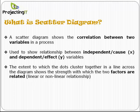A scatter diagram helps to show the correlation between two variables in a process. Dots representing data points are scattered on the diagram. The extent to which the dots cluster together in a line across the diagram shows the strength with which the two factors are related.